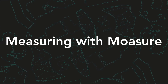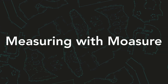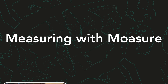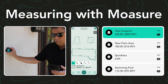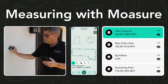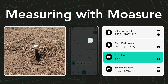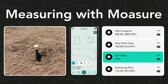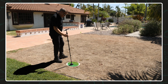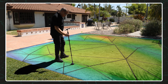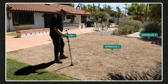This tutorial features a step-by-step guide on measuring a residential house and backyard with Moja. You'll learn how to use layers to capture key features including the house footprint, backyard, pool and sprinkler locations. Additionally, we'll show you how to calculate the surface area of the backyard where the sprinklers are located and label each sprinkler's position.